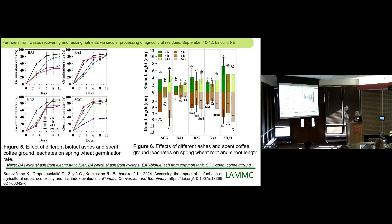We prepared extracts by extracting biofuel ashes from different locations for 2, 4, and 24 hours. We found that ashes taken from the cyclone had a very good germination rate, same as the control germinated in deionized water — after 10 days the germination was around 80%. For seeds germinated in extracts from the electrostatic filter, the germination rate was the lowest.